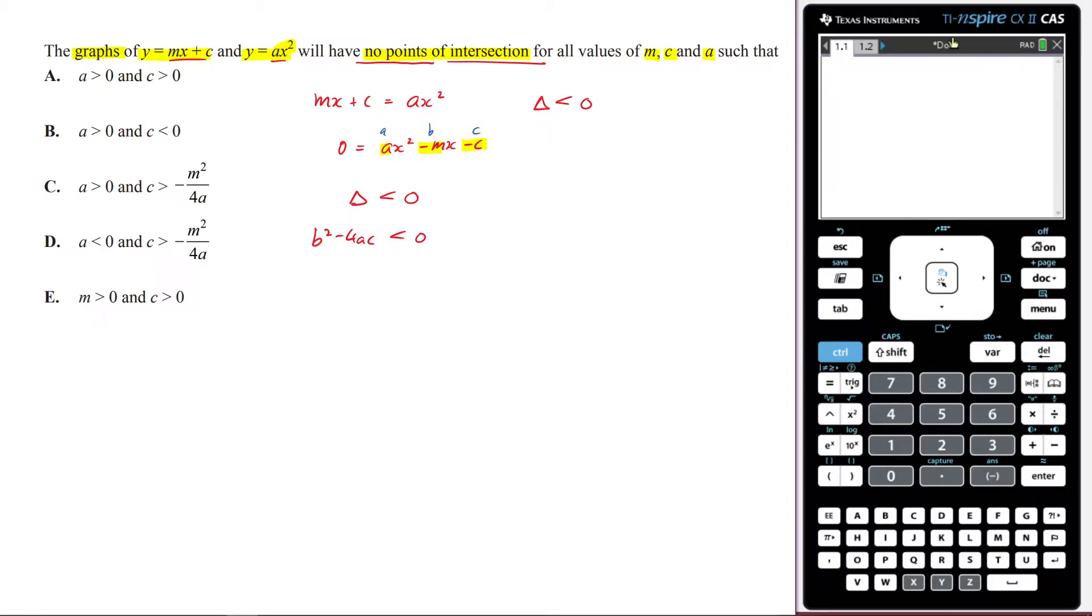So that means I'm going to get, now my b value is negative m, so negative m squared minus 4a times negative c is less than zero. This is going to become positive m squared plus 4ac is less than zero.